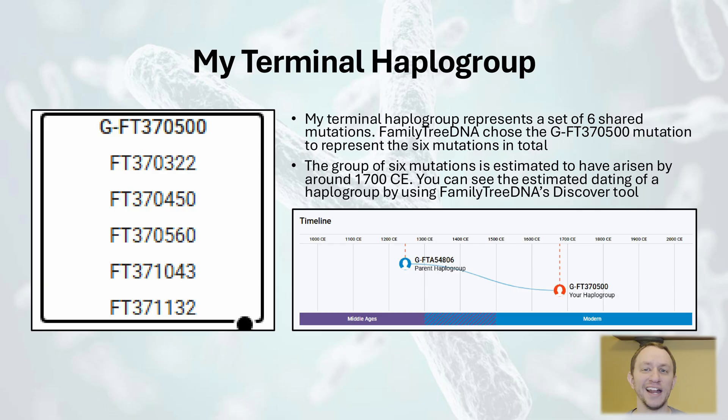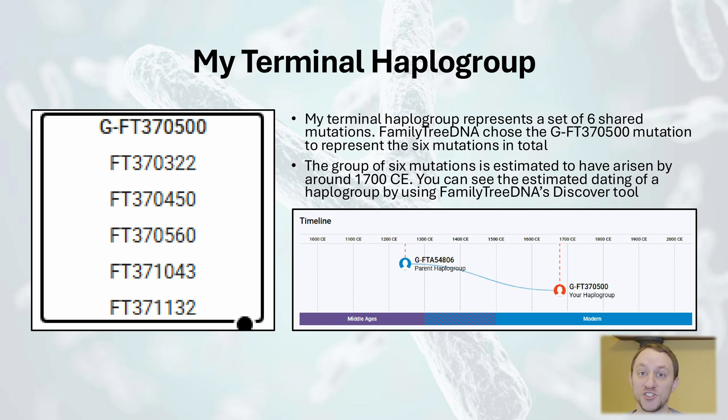This means that any other testers who are a part of GFT370500 share a most recent common ancestor with me from around 300 years ago. Keep in mind, though, that this date is just an estimate. By looking at the Y-DNA time tree on Discover, you can see the confidence bars that will give a wider range for the dating of your terminal haplogroup.